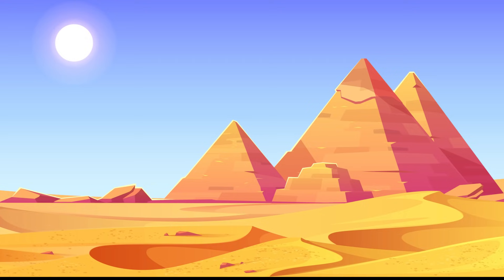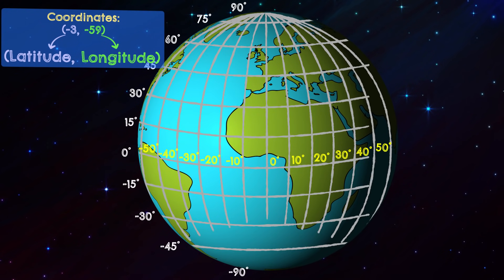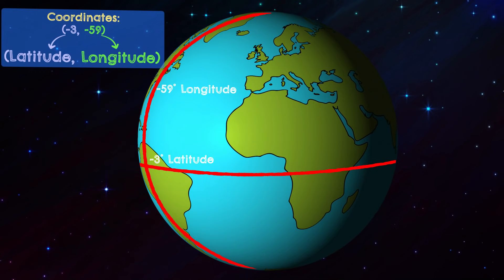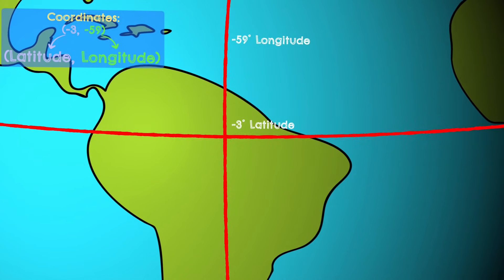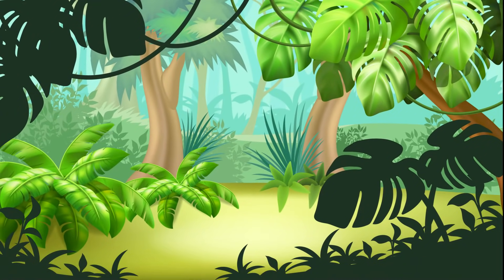In the same way, if you look for another mystery place with coordinates of minus 3 and minus 59, you would look for the latitude line at minus 3 degrees and the longitude line at minus 59 degrees, and where these two lines meet you would find our second mystery place — the Amazon Rainforest.